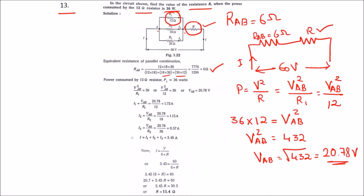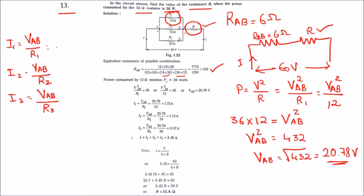Now let us find I1, I2, and I3 using this voltage. I1 = V_ab / R1, I2 = V_ab / R2, and I3 = V_ab / R3. We know the value of V_ab and R1, R2, R3. Calculating these: I1 = 1.73 amps, I2 = 1.15 amps, and I3 = 0.57 amps.